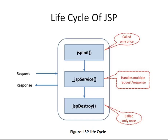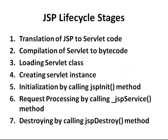Let's see what internally happens in JSP — how a JSP page is converted to a servlet to service the request. Generally, seven lifecycle stages are there in JSP's lifecycle: Stage 1 is translation of JSP to servlet code, Stage 2 is compilation of servlet to bytecode, Stage 3 is loading servlet classes, Stage 4 is creating servlet instances, Stage 5 is initialization by calling the JSP init method, Stage 6 is request processing by calling the JSP service method, and Stage 7 is destroying by calling the JSP destroy method.